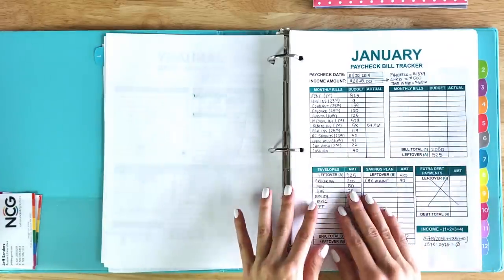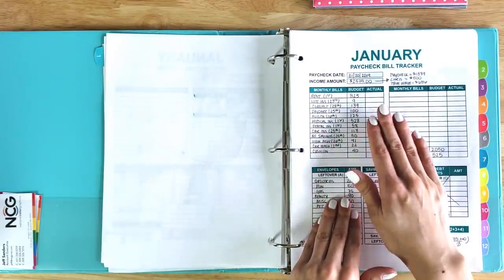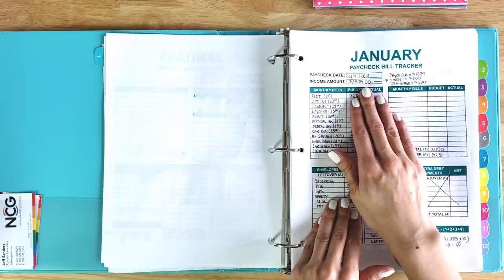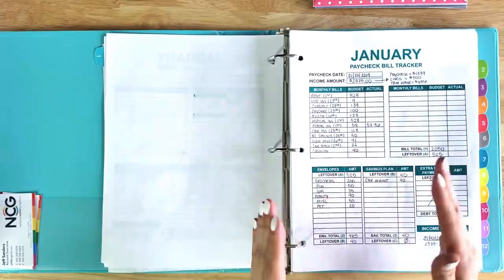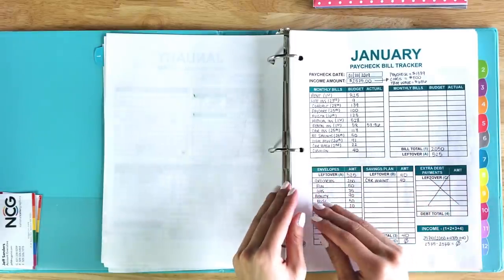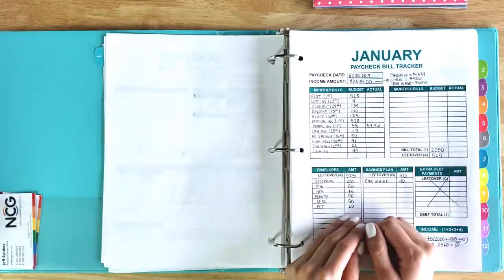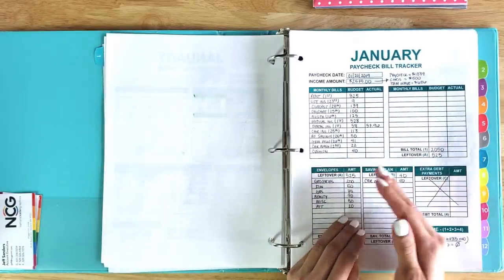It's also important to know that my paycheck budgets are zero-based budgets, meaning every single dollar of my income is being used somewhere in my budget. When I started the zero-based budget, because every dollar is being spent, I was worried about my checking account getting brought down to zero every month or every paycheck.